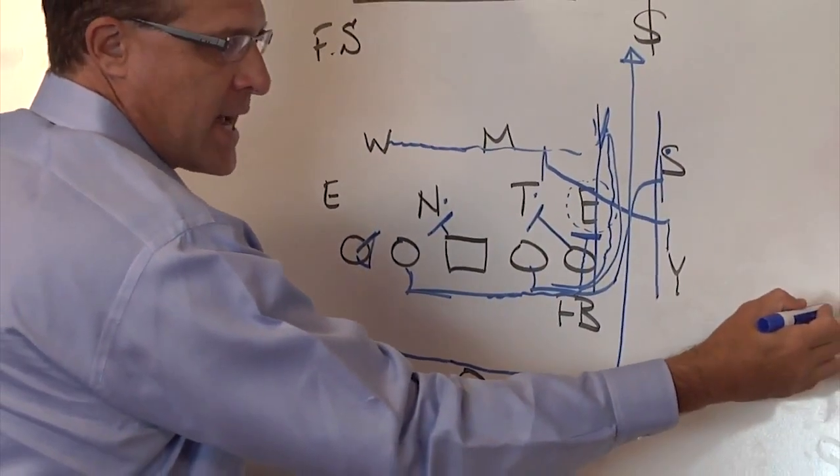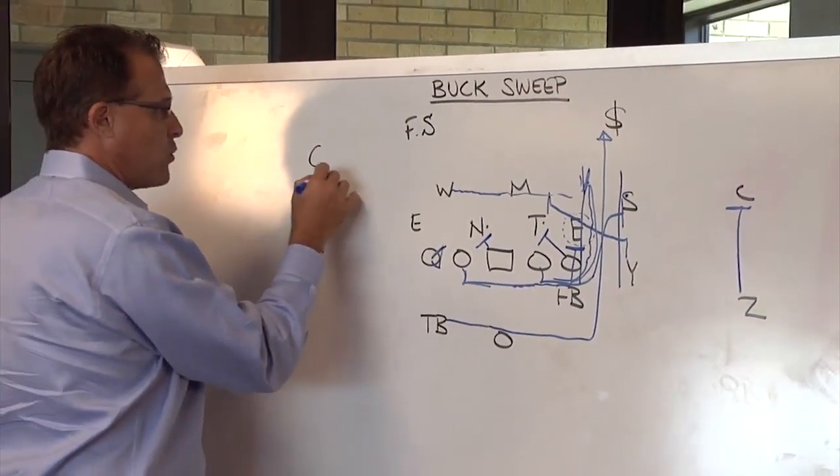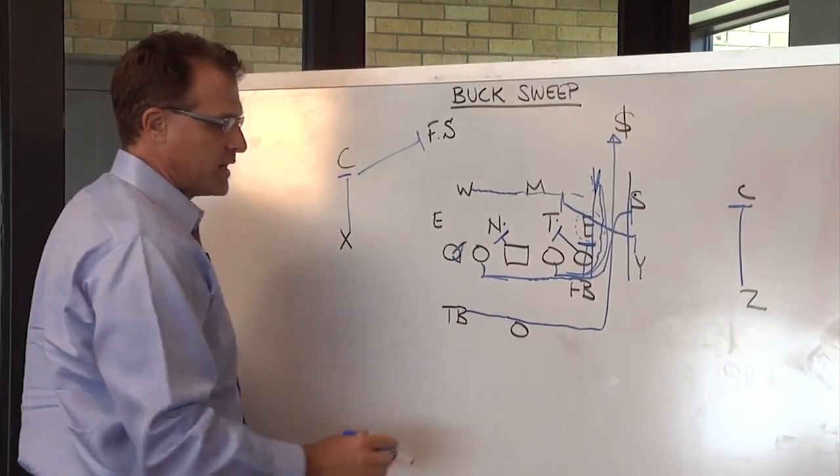Very simple on the outside. We're going to get a max split. We're going to block the corner. And on the backside, we're either blocking the corner or if we can get the safety, we'll try to get two for one.